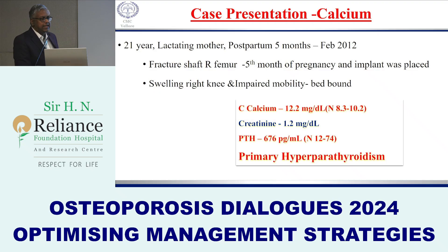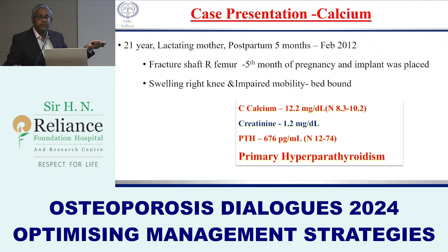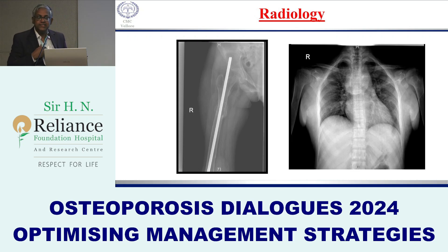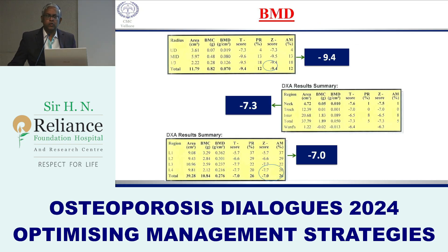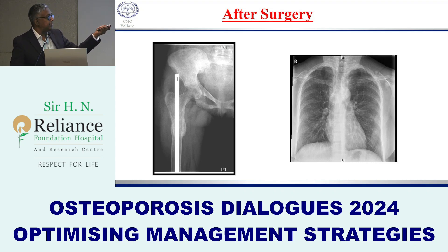Case 2: A 21-year-old lactating mother who sustained a femoral shaft fracture during pregnancy, had an implant placed, and came for follow-up after delivery. Calcium had not been measured initially. She had elevated calcium and elevated PTH — primary hyperparathyroidism. Imaging showed the implant had migrated, no callus had formed, and the sternum was bulging due to a brown tumor. A parathyroid scan localized a right-sided parathyroid adenoma. After surgery, beautiful callus formation was seen and the sternal mass decreased.